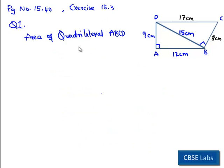Now area of quadrilateral ABCD can be obtained by area of triangle ABD plus area of triangle BDC. And we know that area of any triangle is equal to half of product of base into height.